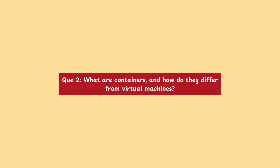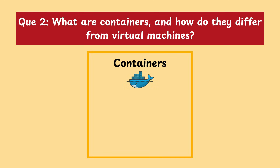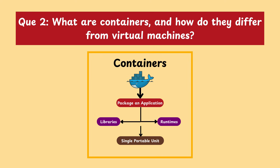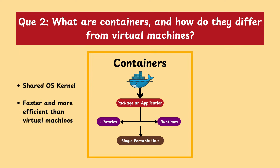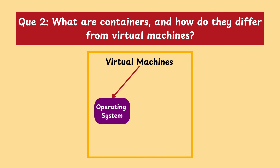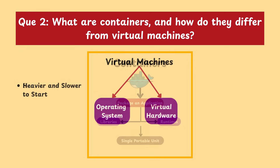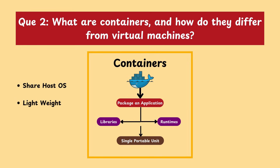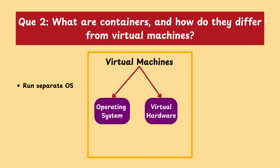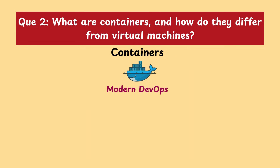Moving on with our next question: what are containers and how do they differ from virtual machines? Containers are lightweight, portable units that package an application along with everything it needs to run, like code, libraries, and dependencies. They run on a shared OS kernel, making them faster and more efficient than virtual machines. Virtual machines include an entire operating system and virtual hardware, which makes them heavier and slower to start. Containers are preferred in modern DevOps for faster deployment, testing, and development.